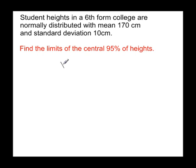So we can represent this as a normal distribution with a mean of 170, that's the population mean, and the population variance will be 10 squared, or 100.